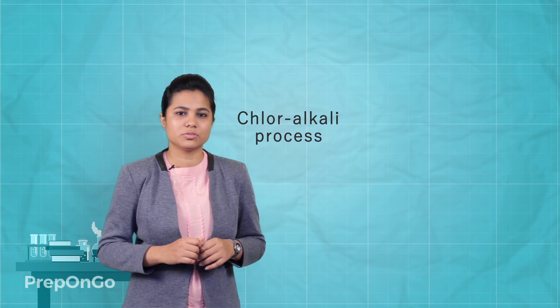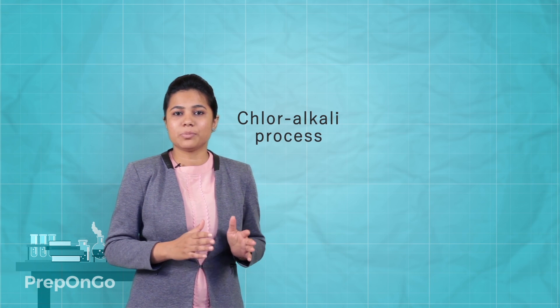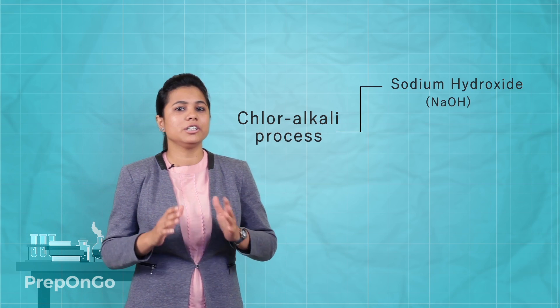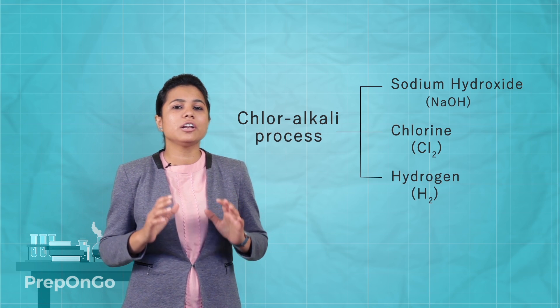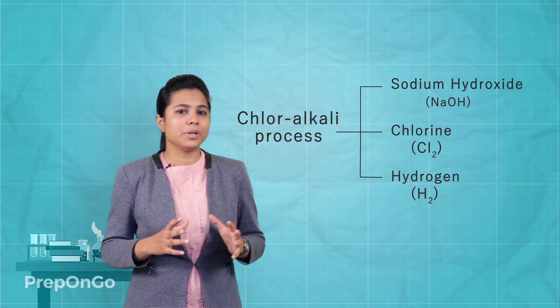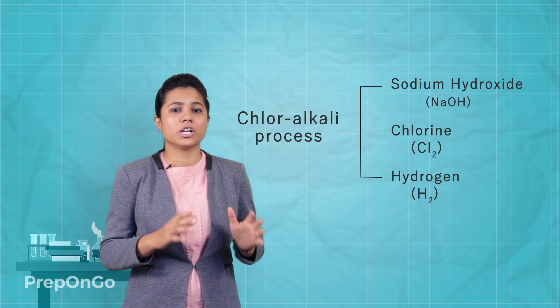Hello everyone. In the last video, we have seen the chloralkali process and the three products which were formed. Now, these three products — sodium hydroxide, chlorine, and hydrogen — are taken in different combinations to make different salts which are used in our day-to-day life. So, let's see these salts one by one in detail.